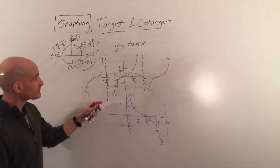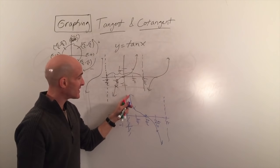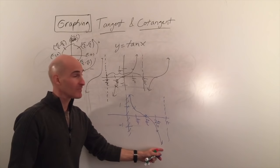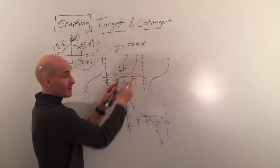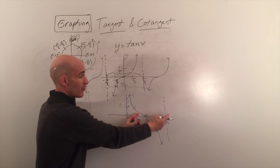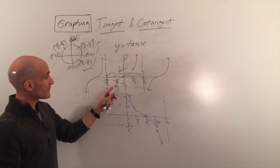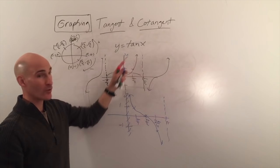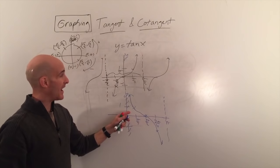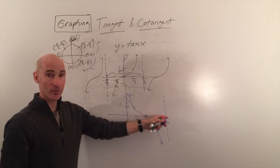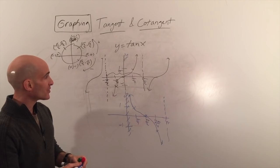A key distinction: tangent goes up to the right while cotangent goes down to the right. For tangent, half the graph is to the left of the y-axis and half to the right. For cotangent, the whole graph is to the right of the y-axis. Both have a period of pi and can be divided into four pieces as parent graphs.